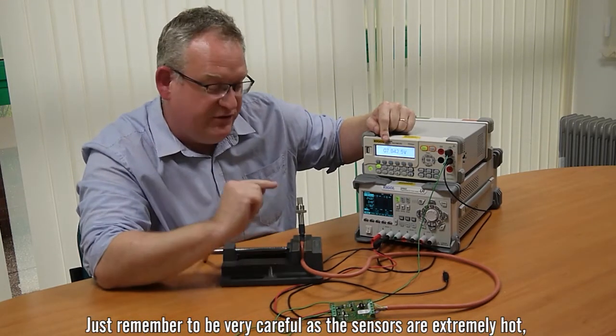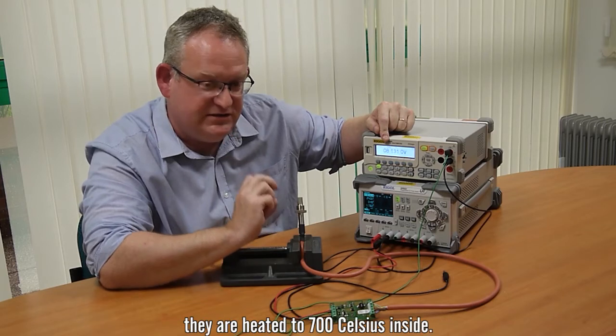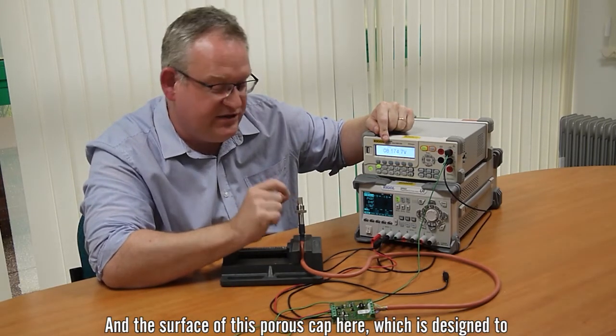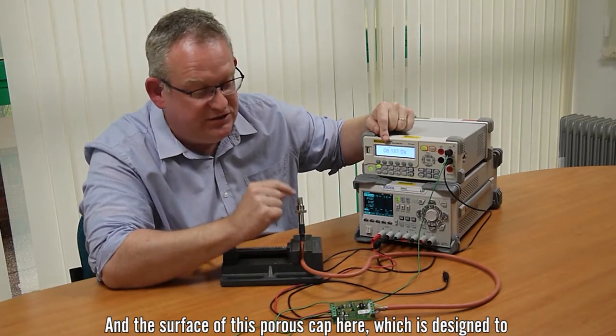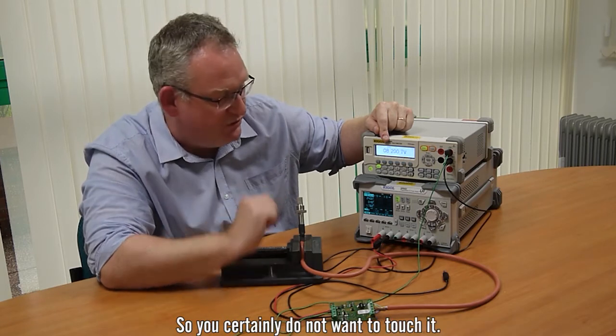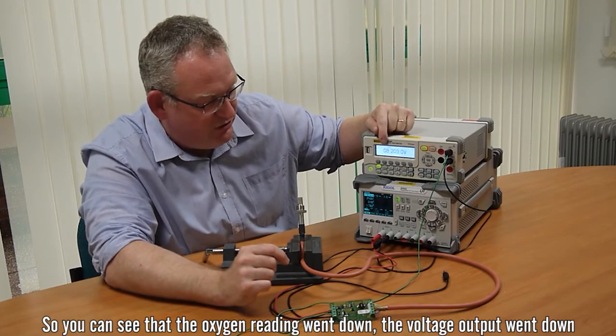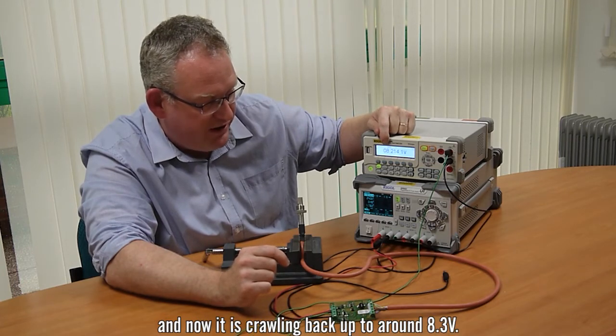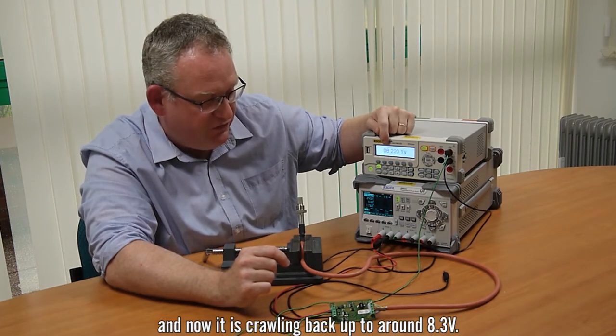Just remember to be very careful, the sensors are extremely hot, they're heated to 700 celsius inside and the surface of this porous cap here, which is designed to protect the sensor, but to let gas through is around 250 celsius. So you certainly don't want to touch it. So you can see the oxygen really went down, the voltage output went down and now it's crawling back up to around 8.3 volts.